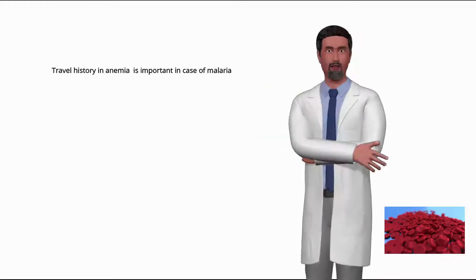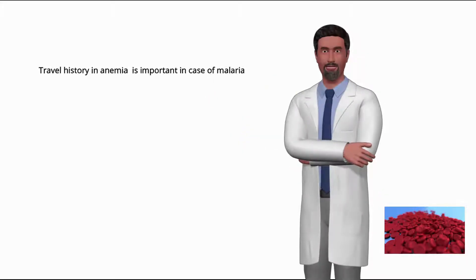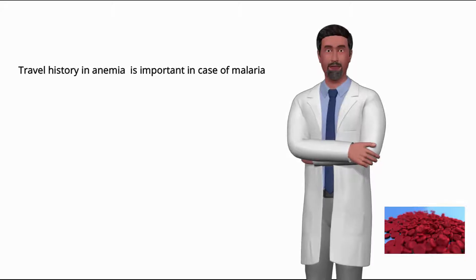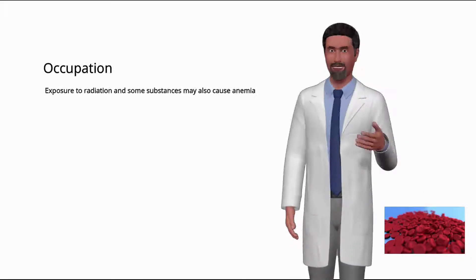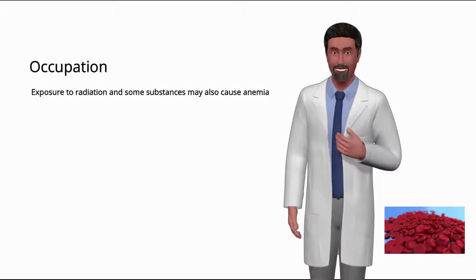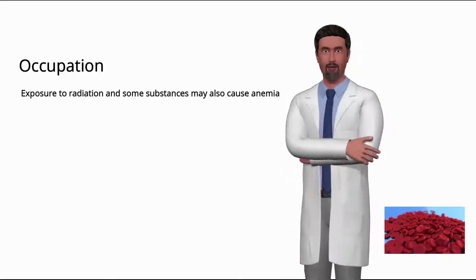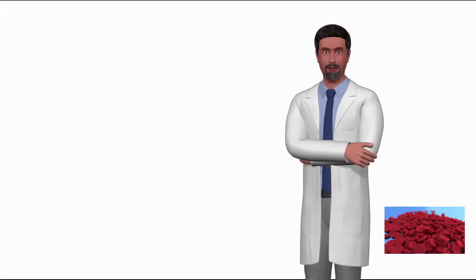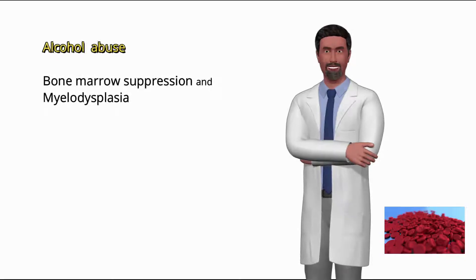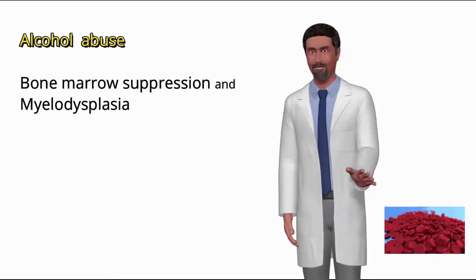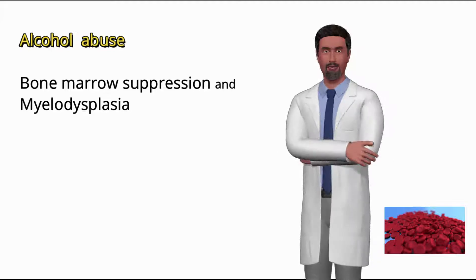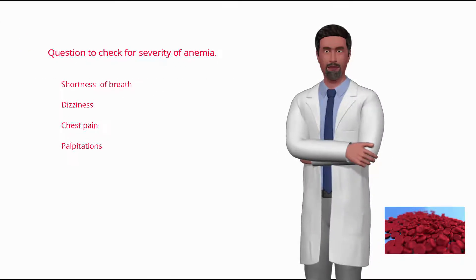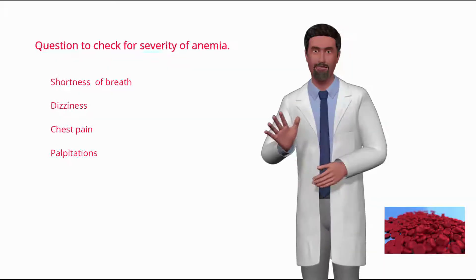Travel history in anemia is important, especially in cases of malaria. Also ask about occupation, as exposure to radiation and certain substances may also cause anemia. It is important to ask about alcohol intake, as alcohol abuse is associated with bone marrow suppression and myelodysplasia.